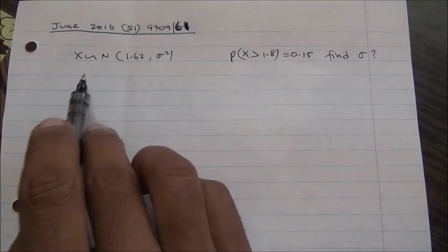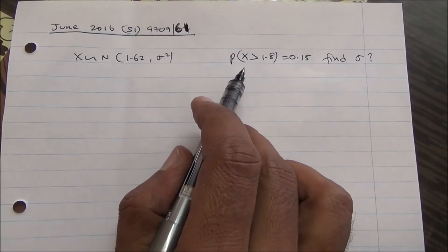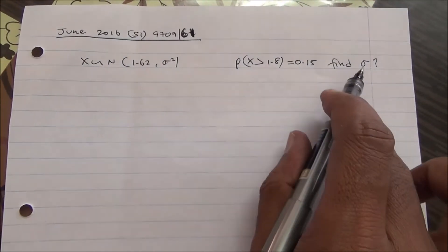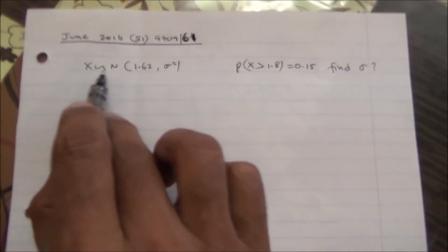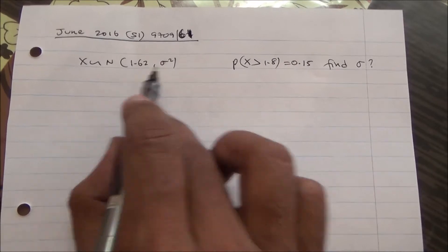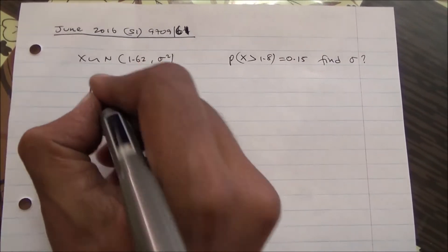OK, for this question, this is the information and what we can do, we need to find sigma. X is normally distributed with the following parameters and so we have to standardize.